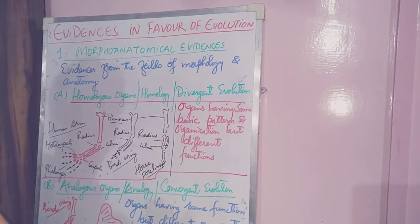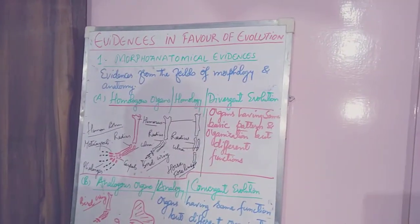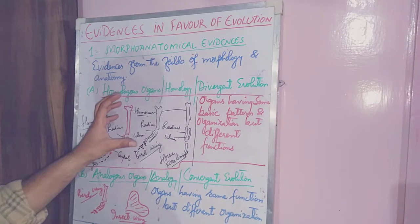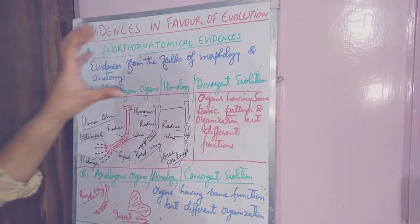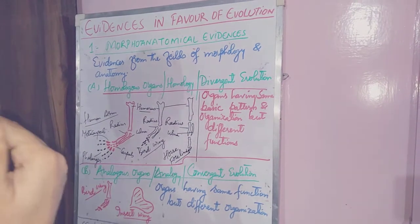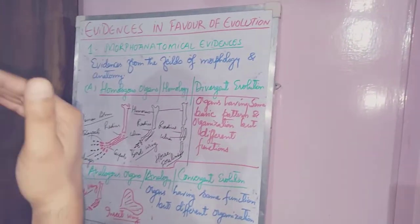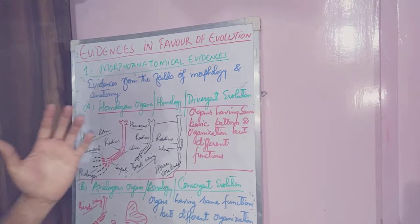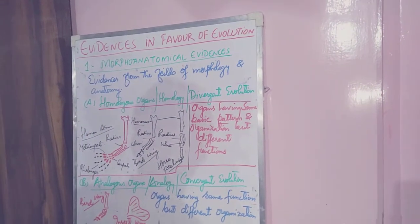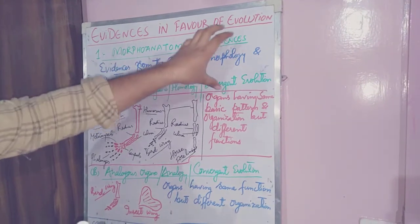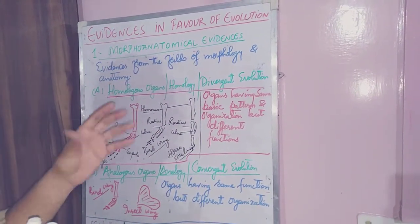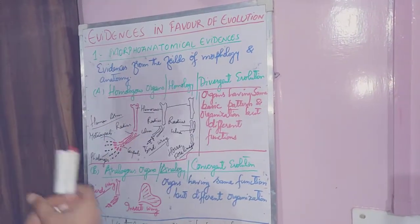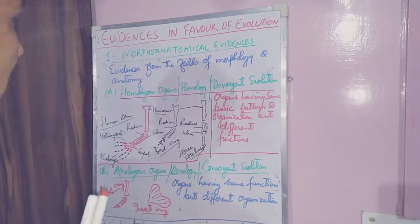There are evidences from various branches of biology in favor of evolution. First of all, we shall see the morpho-anatomical evidences. Morpho-anatomical evidences are all those evidences which are supplied from morphology and anatomy in favor of evolution. Together, we call them morpho-anatomical evidences in favor of evolution.